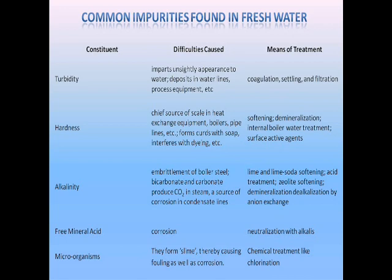Chemical impurities are mainly due to dissolved salts present in water and can be observed by checking the hardness, alkalinity, or acidity of water. To remove such impurities, processes like de-mineralization and reverse osmosis can be used.